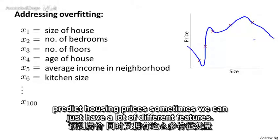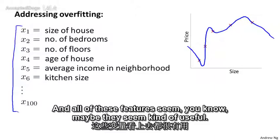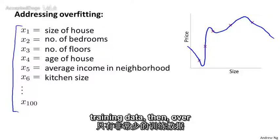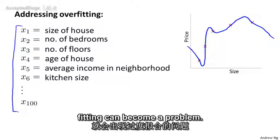So concretely, if we're trying to predict housing prices, sometimes we can just have a lot of different features. And all of these features seem, maybe they seem kind of useful. But if we have a lot of features and very little training data, then overfitting can become a problem.